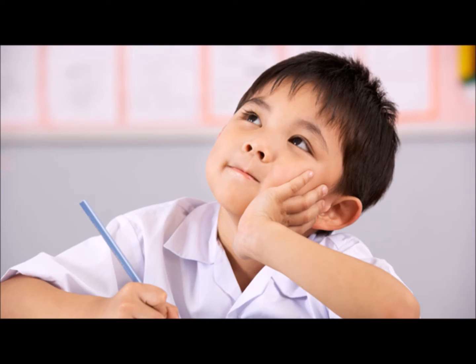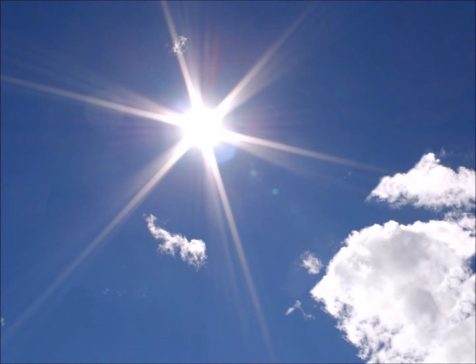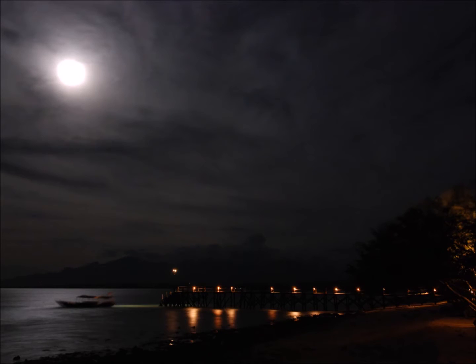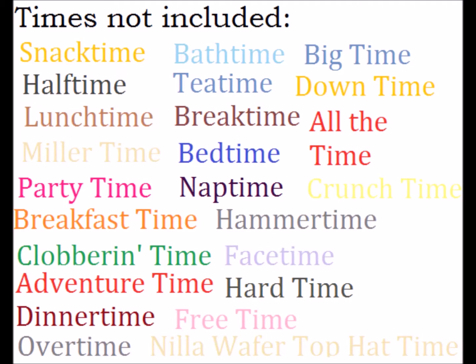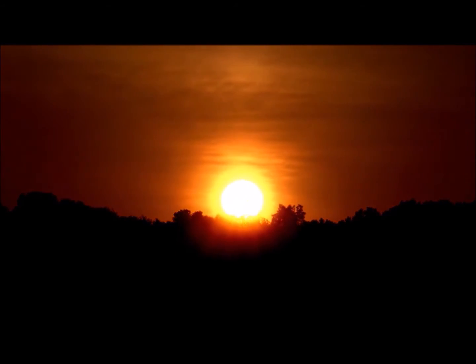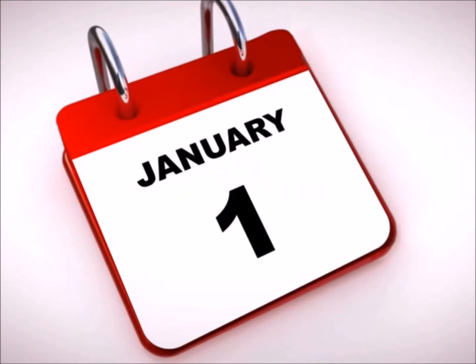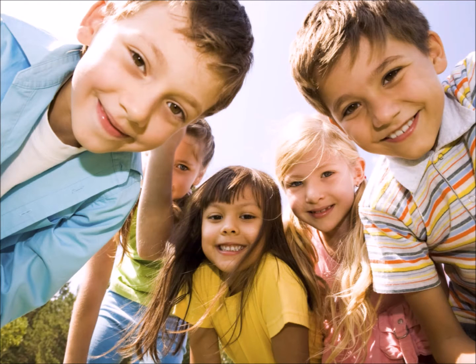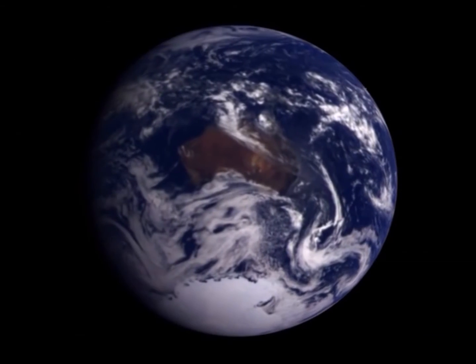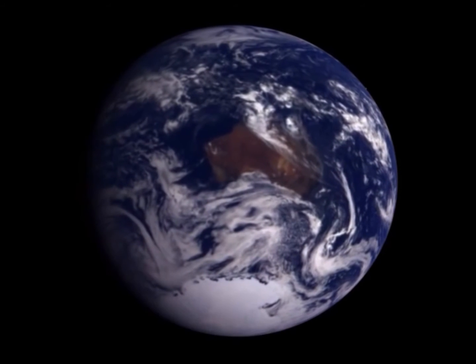You've probably had an idea of what a day is since you were very young. You knew that daytime was when the sun was in the sky, and nighttime came after the sun had set. When the sun rose in the morning, set in the evening, and then rose again after 24 hours, you knew that one day had gone by. When you got older to elementary school age, you probably learned that the sun doesn't actually rise and set, but that the spin of Earth on its axis makes it appear to do so.